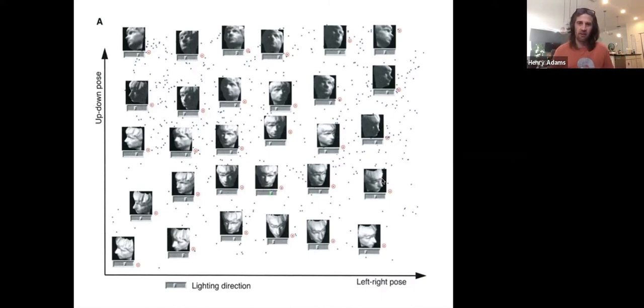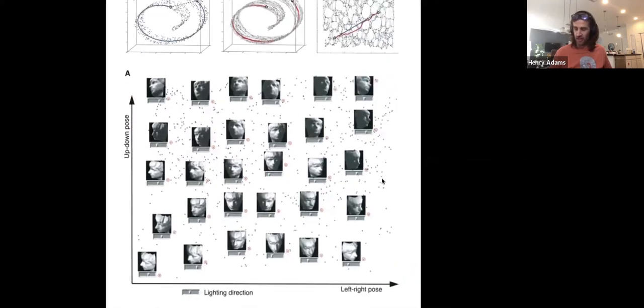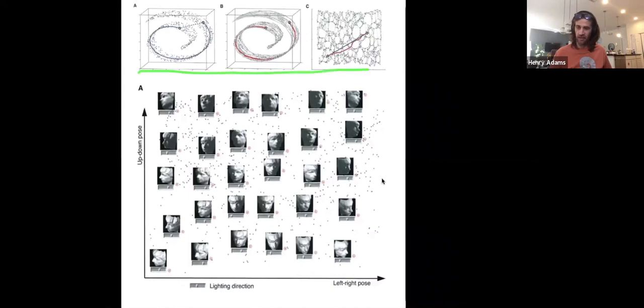But do let me reinforce that we're not choosing what the coordinates we want to embed down onto are. No, we're letting this algorithm embed things in the way they're optimized for the algorithm. And then after the fact, you might try to interpret the coordinates, which is not always obvious. Although in pretty data sets like this, there is a nice interpretation. Any questions?